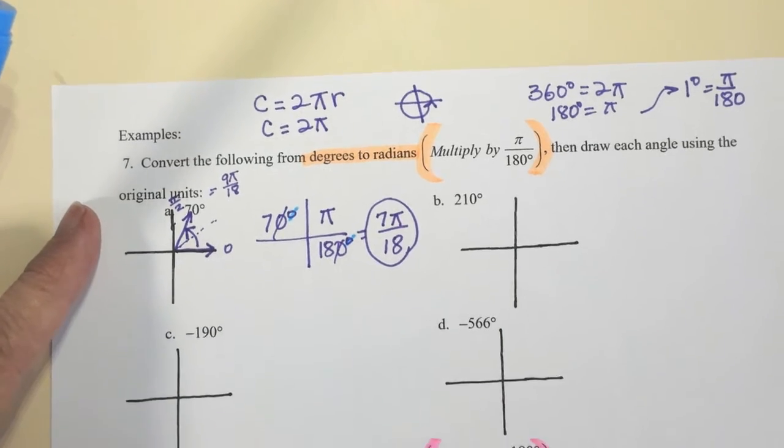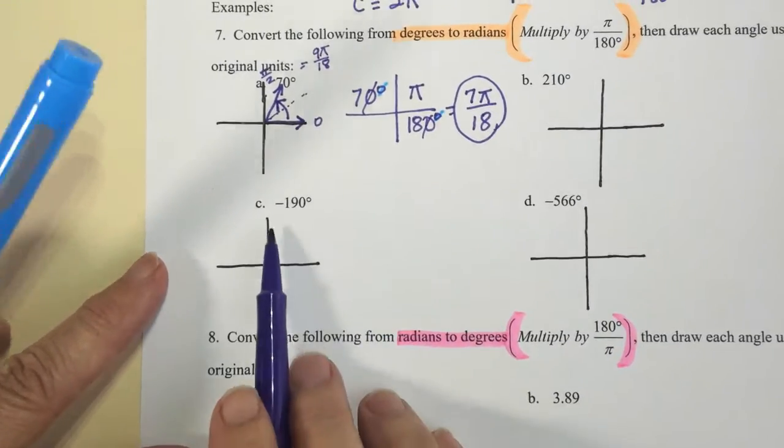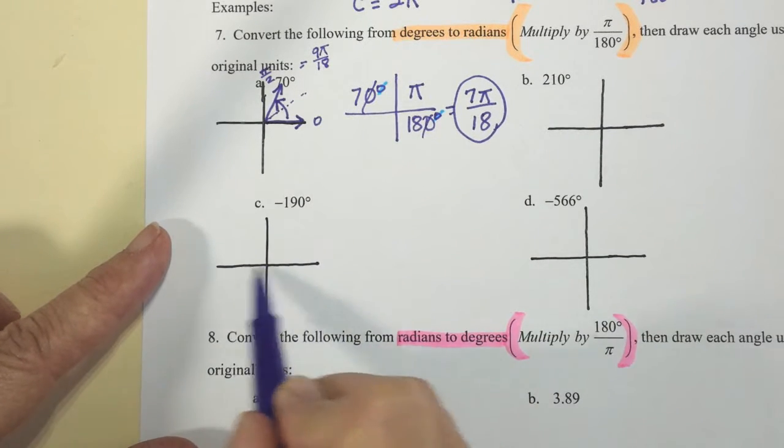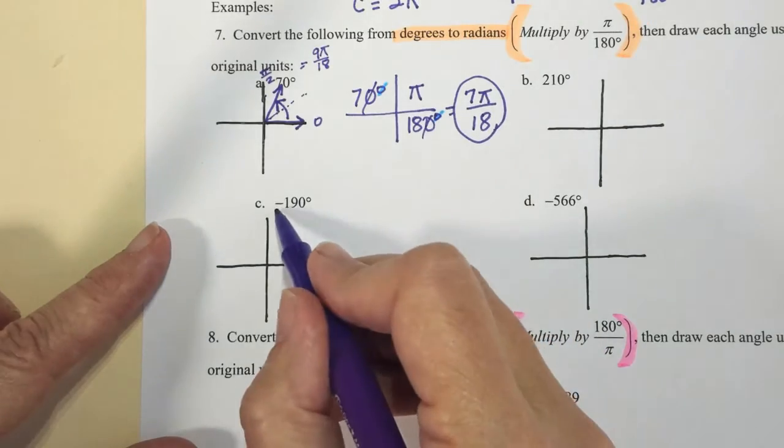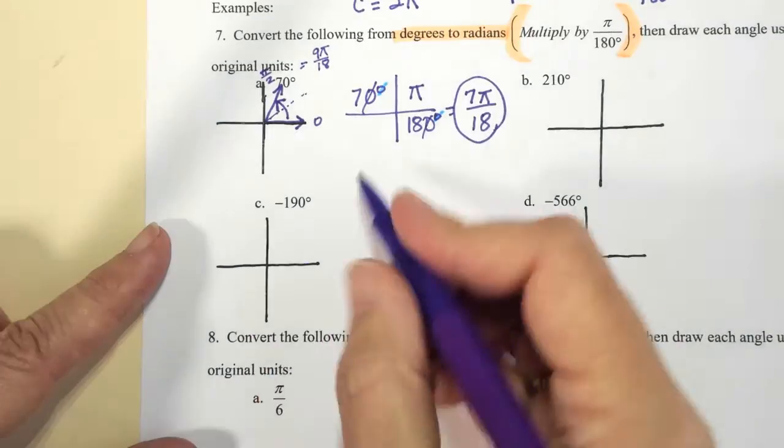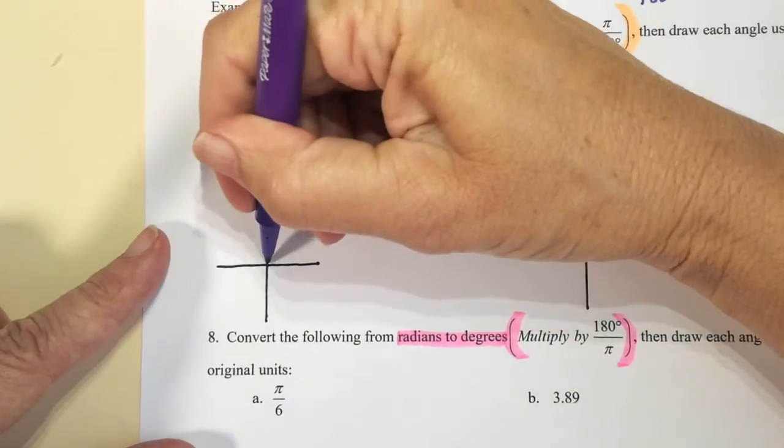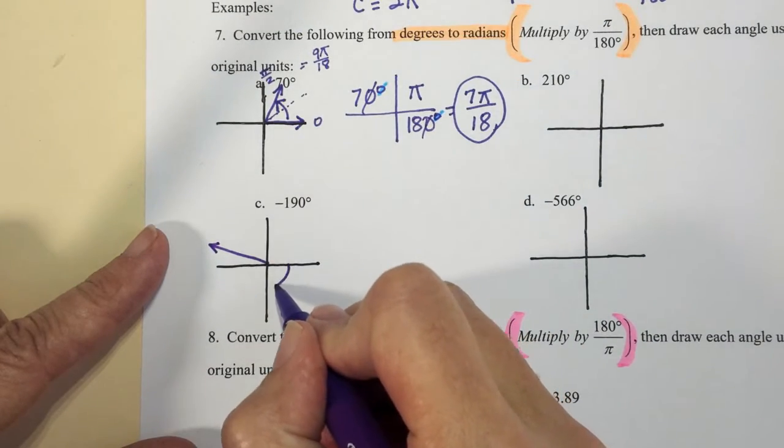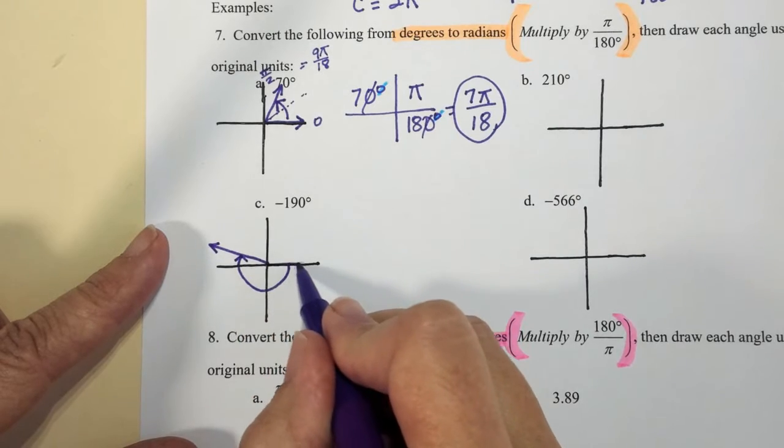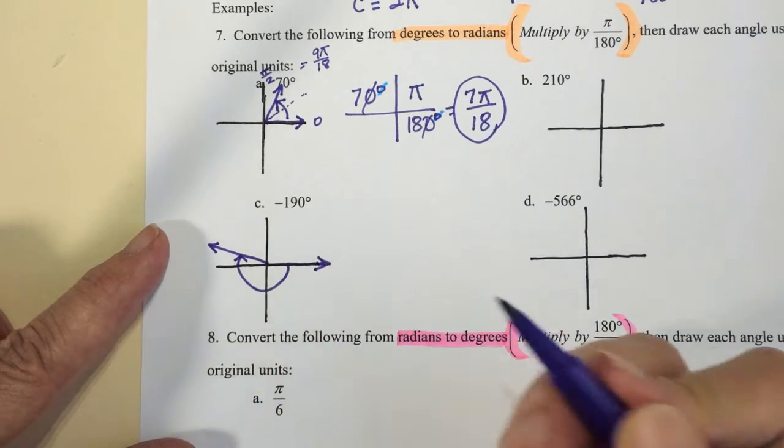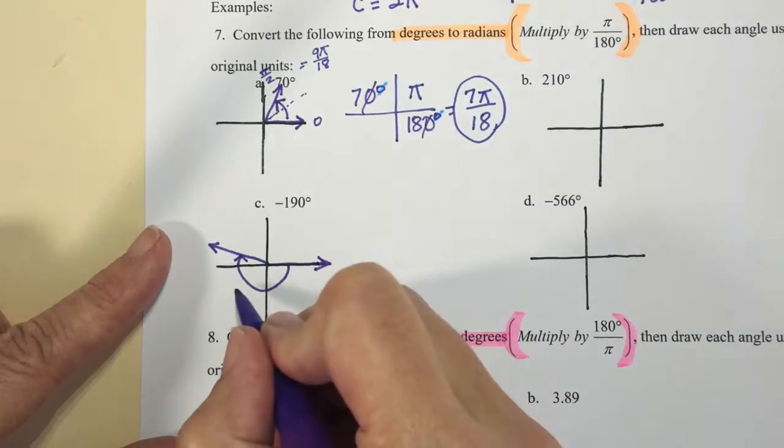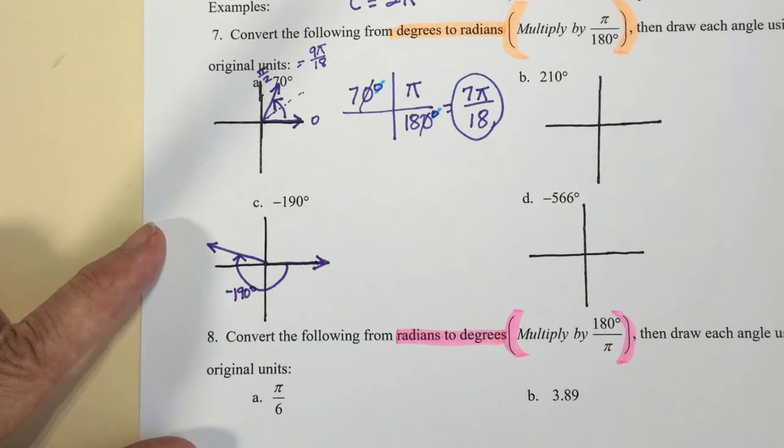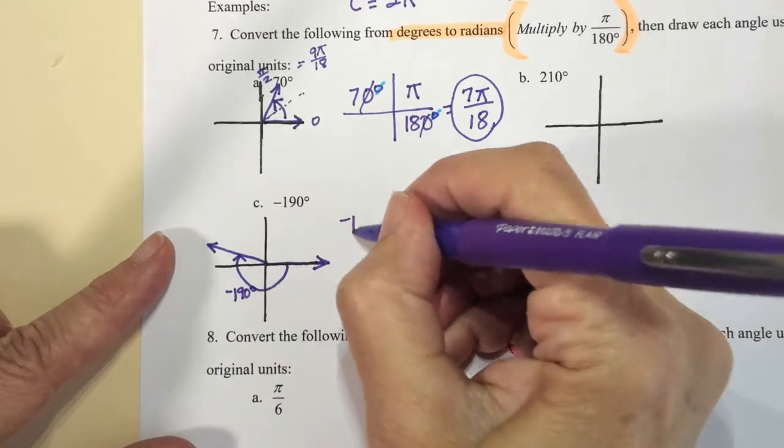So let's do a negative one. 180 degrees is all the way across. Now I'm going negative so I'm going to go in a clockwise direction, so my angle is going to be about here. So this is 180 and then 190, let me draw the other side of my angle. So I have this is about negative 190 degrees. I'm setting up the same format.